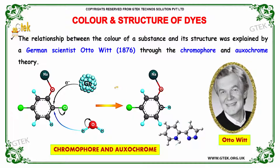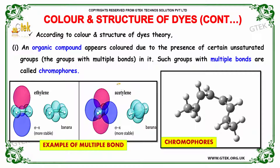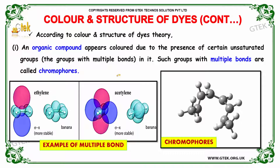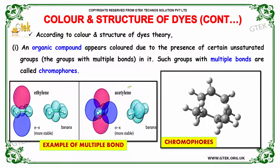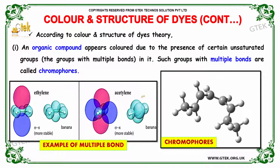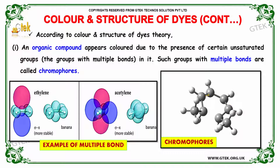This is the working of the chromophore and the oxochrome. According to the color and structure of dyes theory, an organic compound appears colored due to the presence of certain unsaturated groups in it. Such groups with multiple bonds are called chromophores. Examples of multiple bonds where the Pi and Sigma bonds are available are shown in ethylene and acetylene. These are the general three-dimensional structures of chromophores.